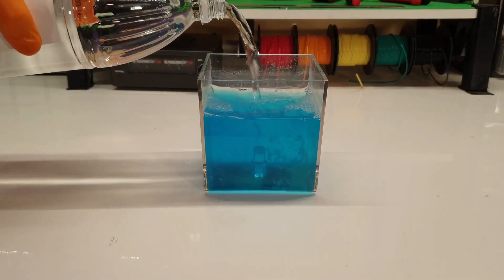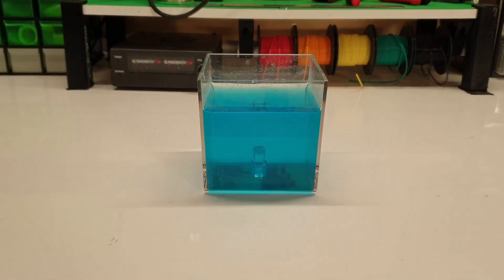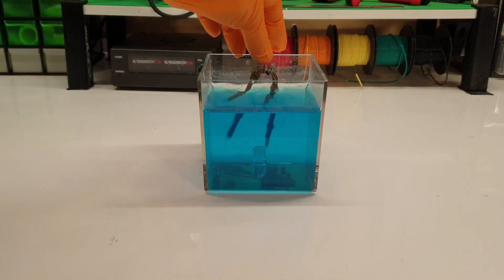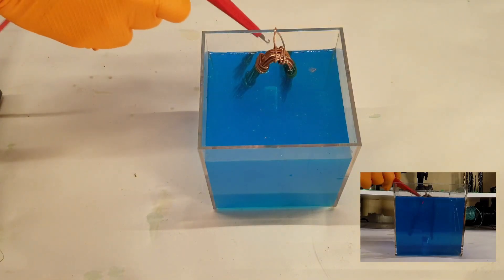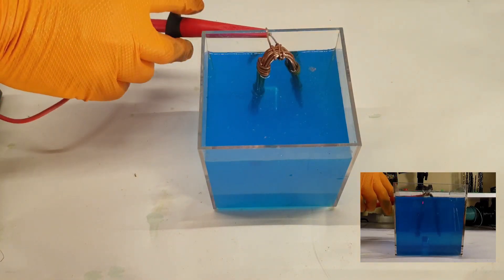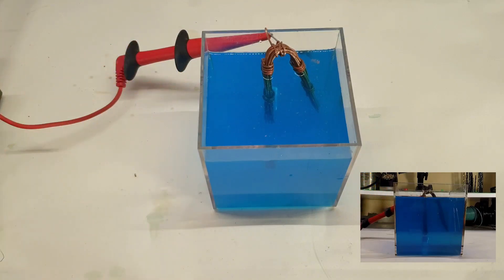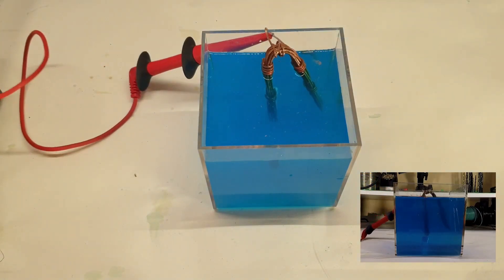Hang your scrap piece of copper on the edge of the container so the majority of it is submerged in the electrolyte, but there's still enough exposed for you to connect wires to. Wrap your 3D printed part rather loosely in some copper wire and connect it to the negative terminal of your power supply. Then connect the scrap copper to the positive terminal of your power supply.